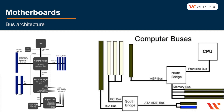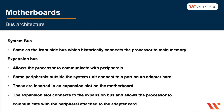The front side bus is part of the motherboard and connects the processor to main memory, while the back side bus connects the processor to the cache. On the right-hand side you can see the different computer buses. The AGP bus, seen in older machines, was a dedicated port purely for a video card, allowing a much faster connection to the CPU. When someone refers to the system bus, they mean the front side bus, which connects the processor and main memory.